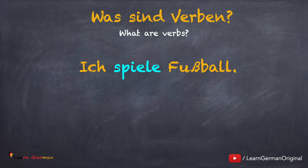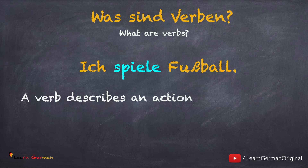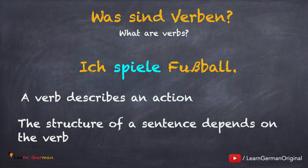Here is an example: ich spiele Fußball. The verb here is 'spiele', that is 'to play' — I play football. As you can notice, the verb describes an action. The sentence structure depends on the verb.